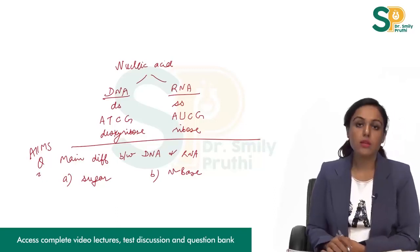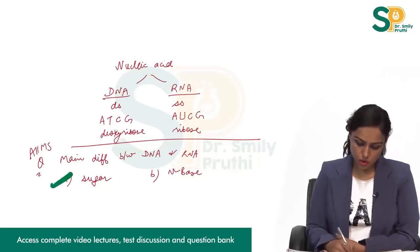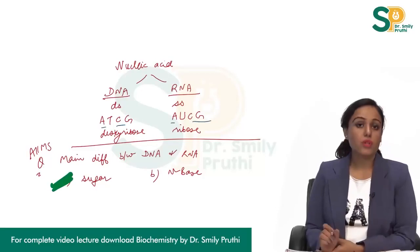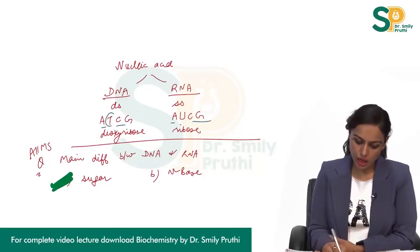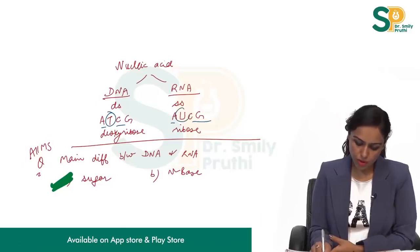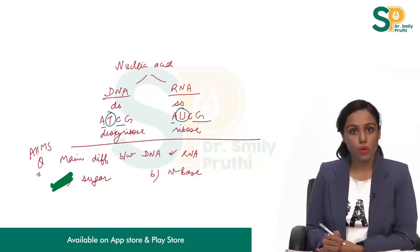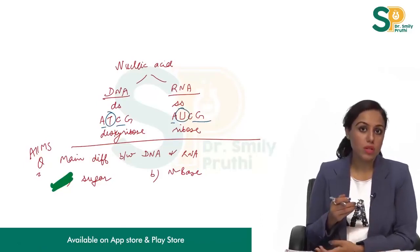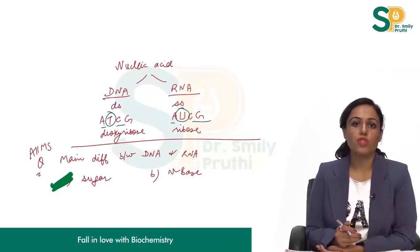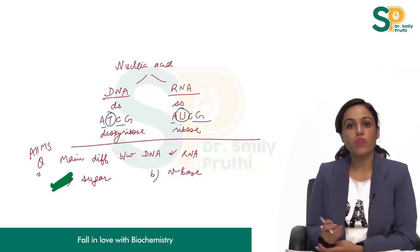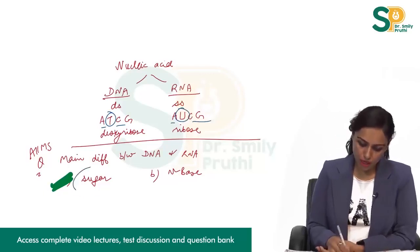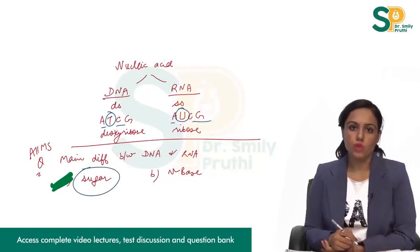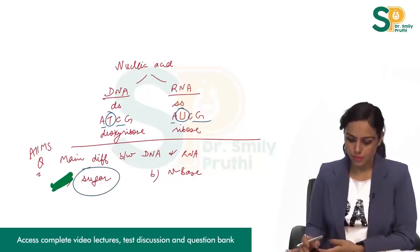The answer is sugar, because the nitrogenous base A, C, G is the same in both; only T and U differ. But sugar is always deoxyribose in DNA and always ribose in RNA. So the main difference is sugar.